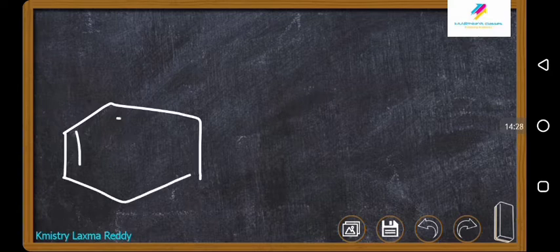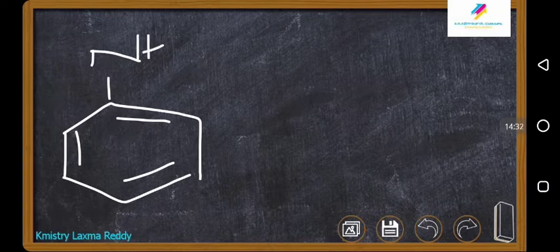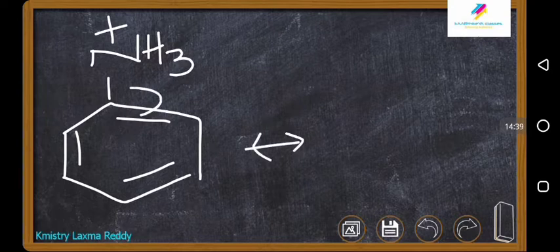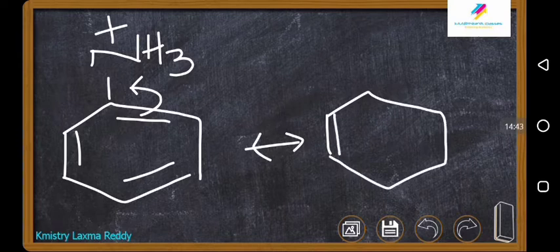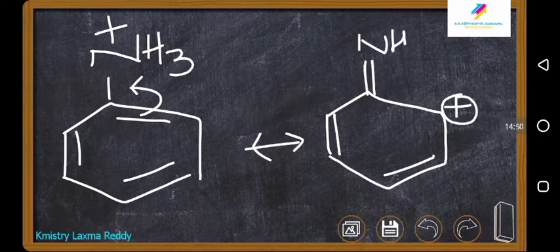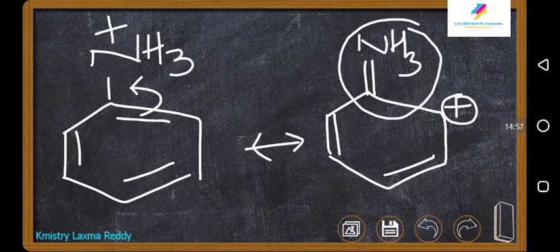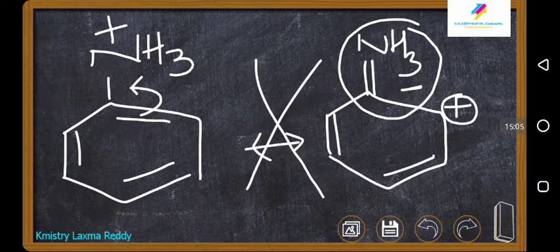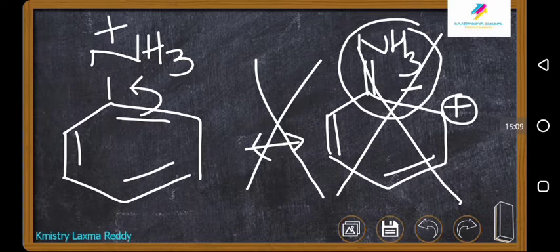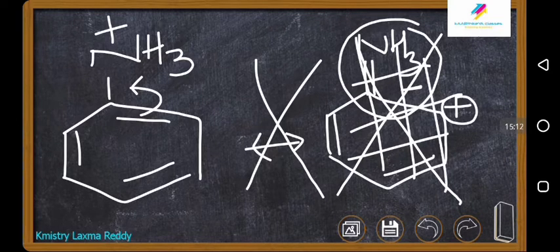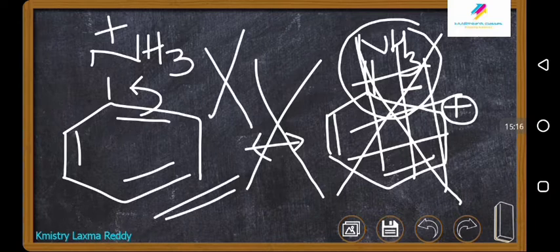Consider benzene attached to a nitrogen with a plus charge (NH3⁺). If you try to write a resonance structure by shifting the electron pair into the ring, nitrogen would need to form five bonds (three with hydrogens plus a double bond). But nitrogen can form a maximum of four bonds only. So this structure is wrong — this compound cannot show resonance, and only one structure is possible for it.